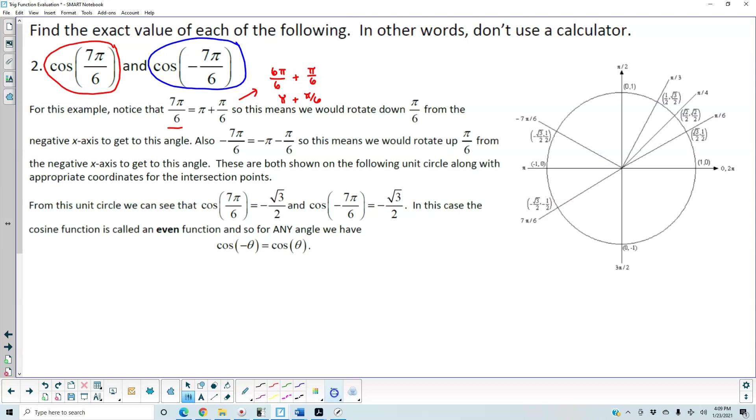So what this means is since we're starting at π over here on the unit circle, this is where π is located. And because it is plus π over 6, that means we need to rotate down from the negative x-axis.